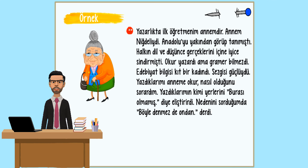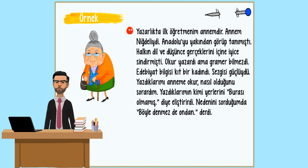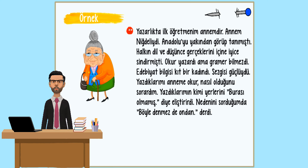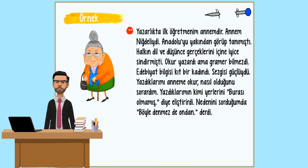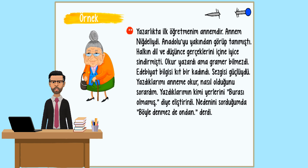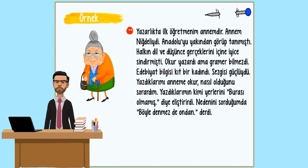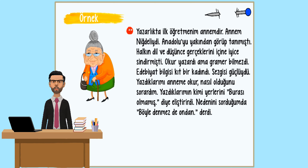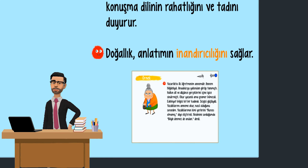Örneğimize bakalım: Yazarlıkta ilk öğretmenim annemdir. Annem Nideliydi, Anadolu'yu yakından görüp tanımıştı. Halkın dil ve düşünce gerçeklerini içine iyice sindirmişti. Okur yazardı ama gramer bilmezdi. Edebiyat bilgisi kıt bir kadındı. Sezgisi güçlüydü. Yazdıklarımı anneme okur, nasıl olduğunu sorardım. Yazdıklarımın kimi yerlerini 'burası olmamış' diye eleştirirdi. Nedenini sorduğumda, 'böyle denmez de ondan' derdi.